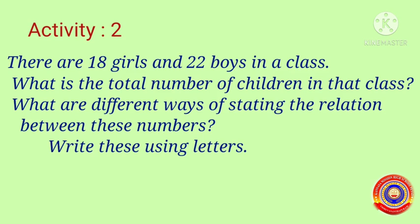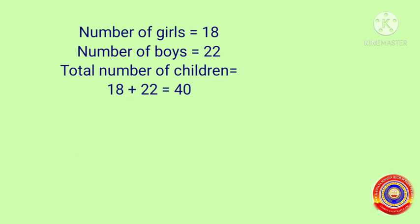Activity number 2. There are 18 girls and 22 boys in a class. What is the total number of children in that class? What are the different ways of stating the relation between these numbers? Write this using letters. The number of girls is given as 18 and the number of boys is given as 22. Then the total number of children is equal to 18 plus 22, that is equal to 40.